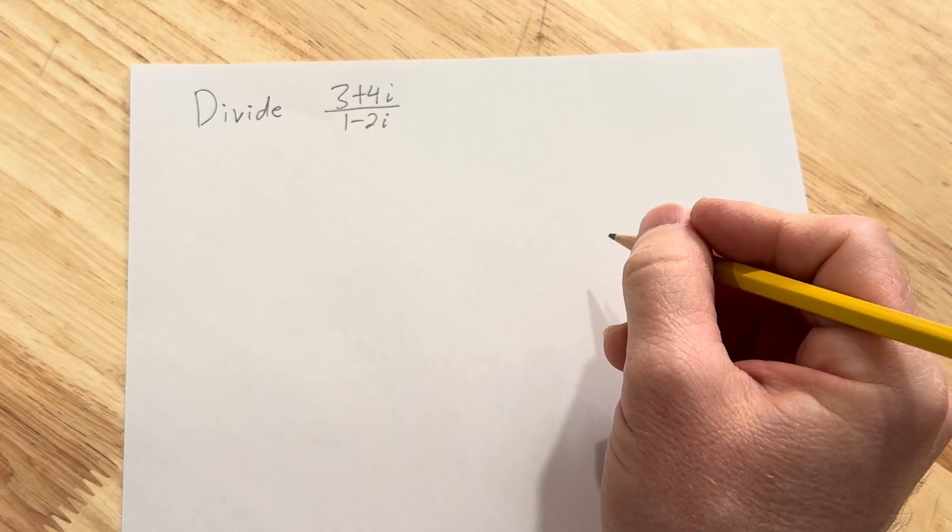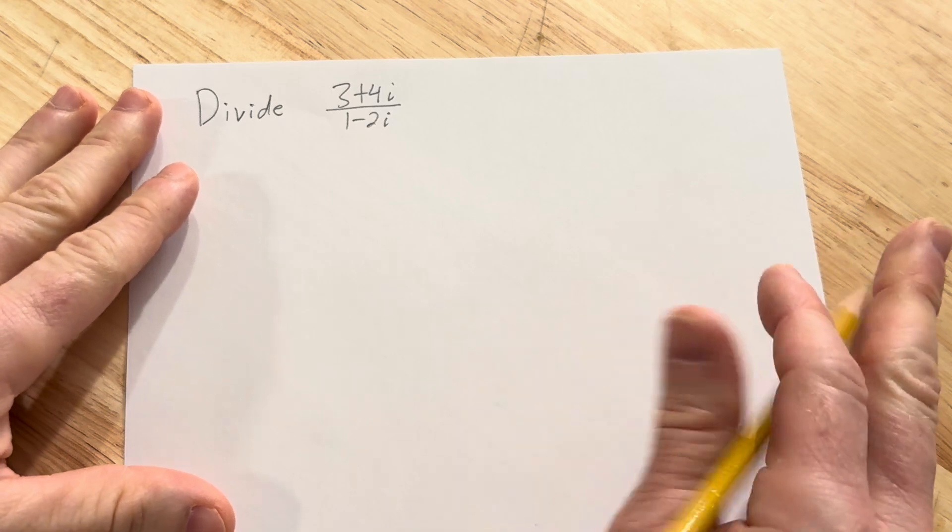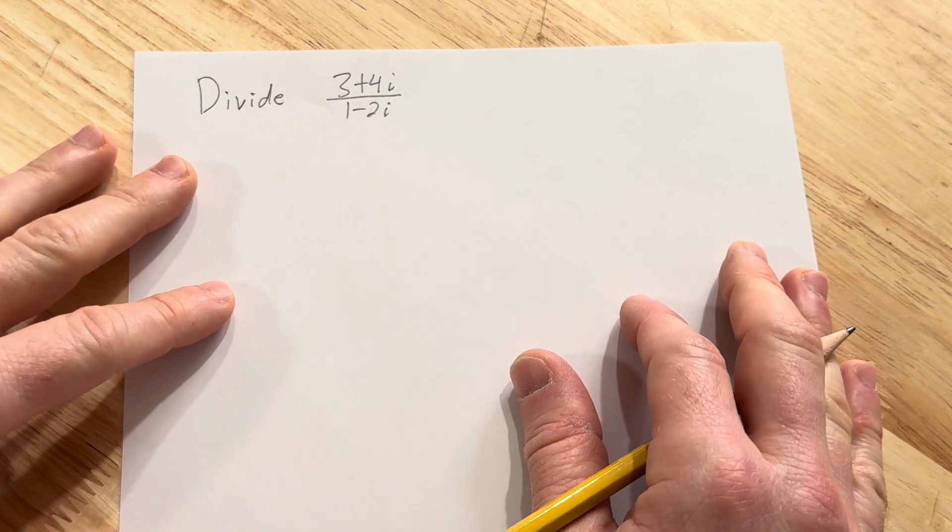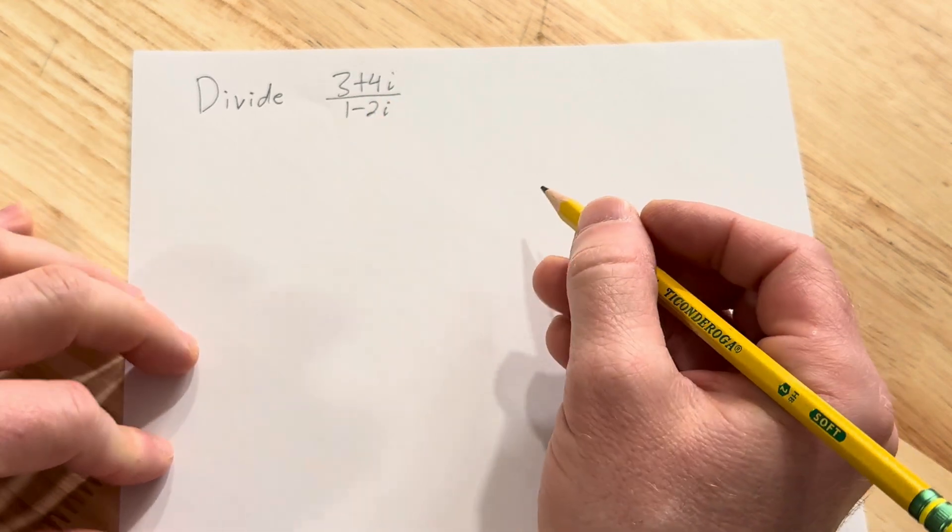Hi, in this video we're going to do some division with complex numbers. We're going to start with this example and then we'll do at least one more example in this video. So we're going to divide 3 plus 4i by 1 minus 2i.